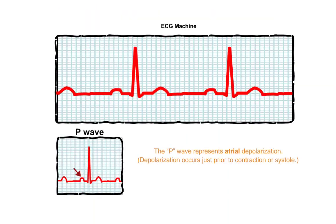The P wave represents atrial depolarization. Depolarization occurs just prior to contraction, or systole.